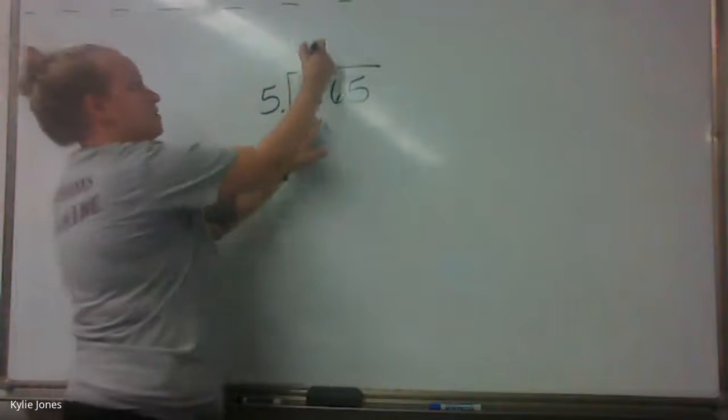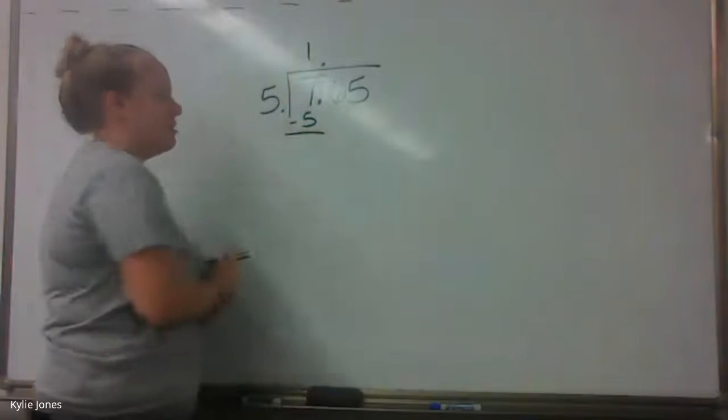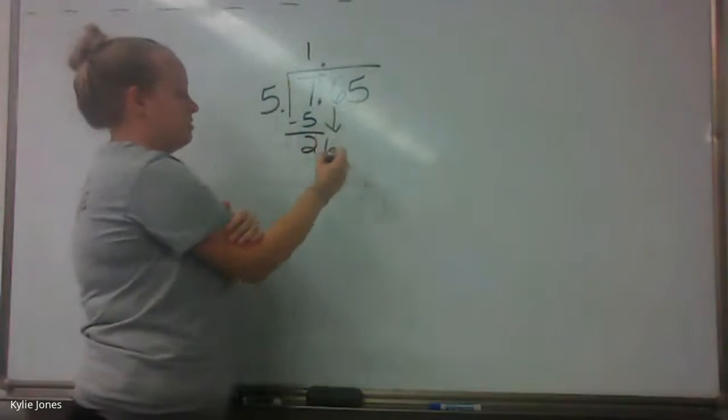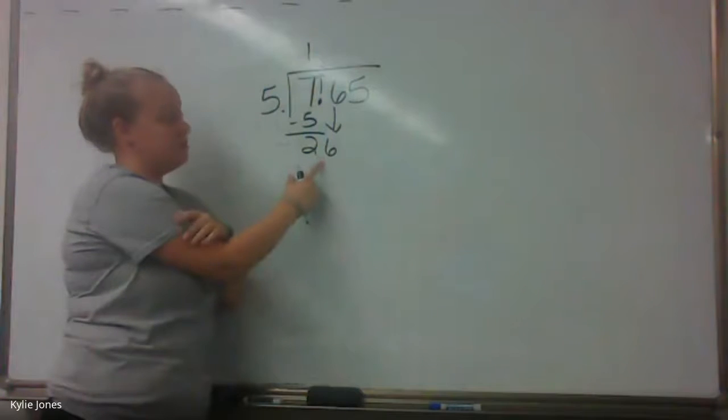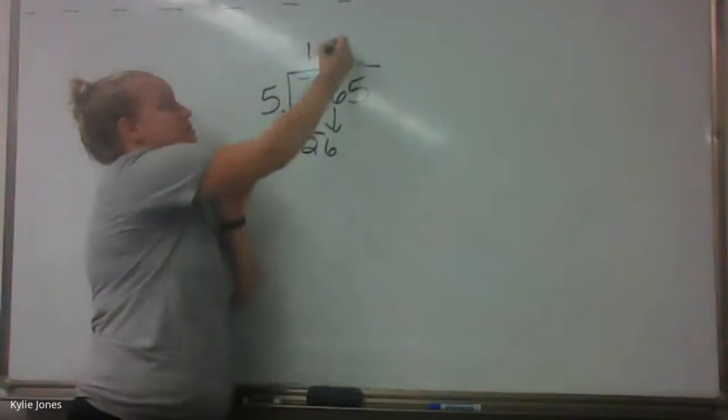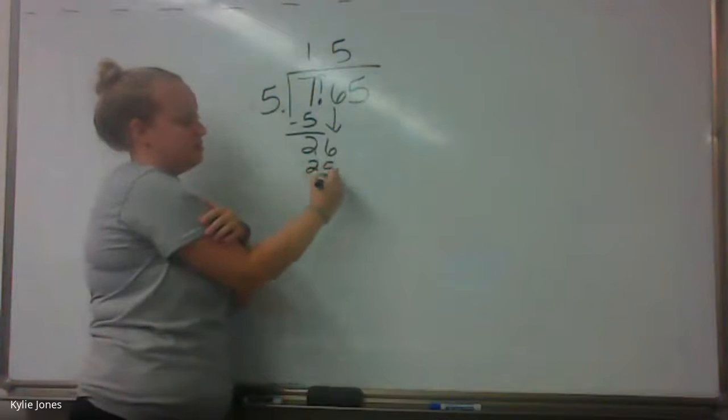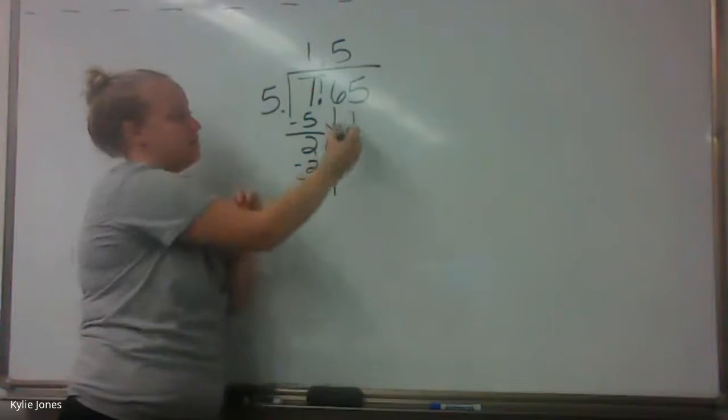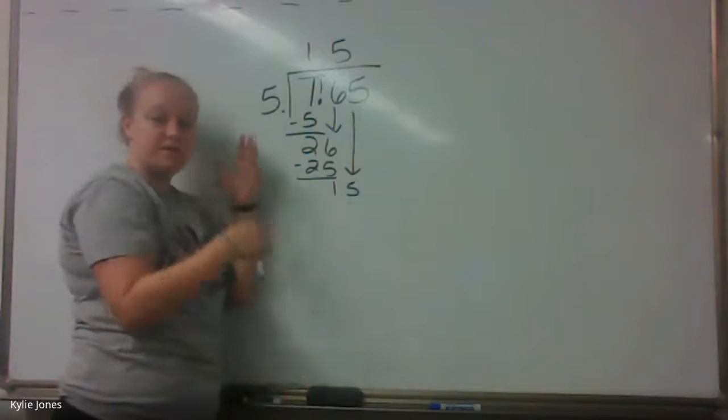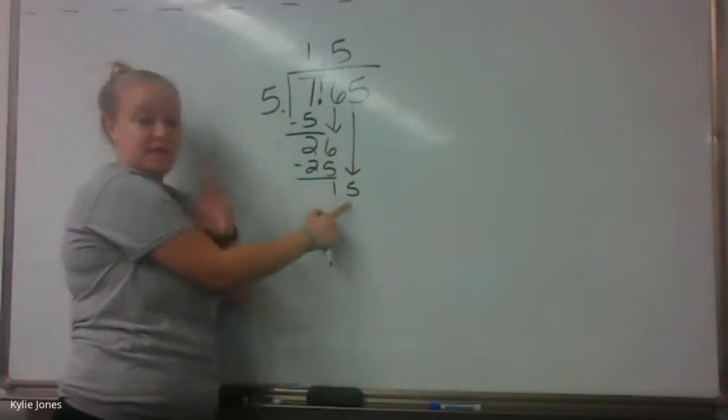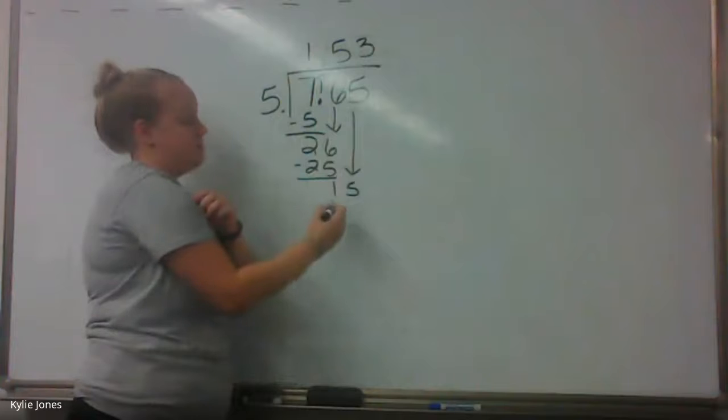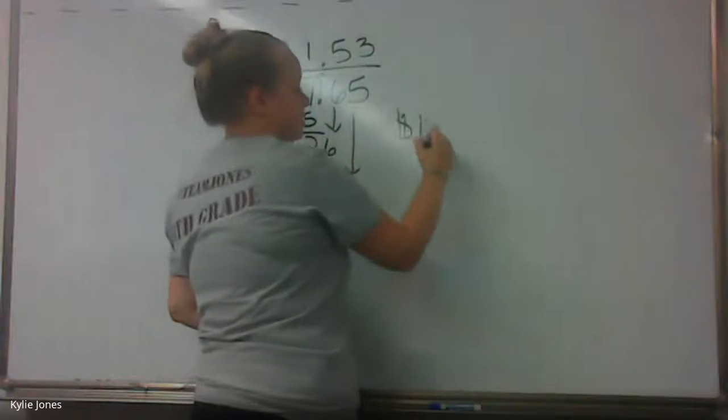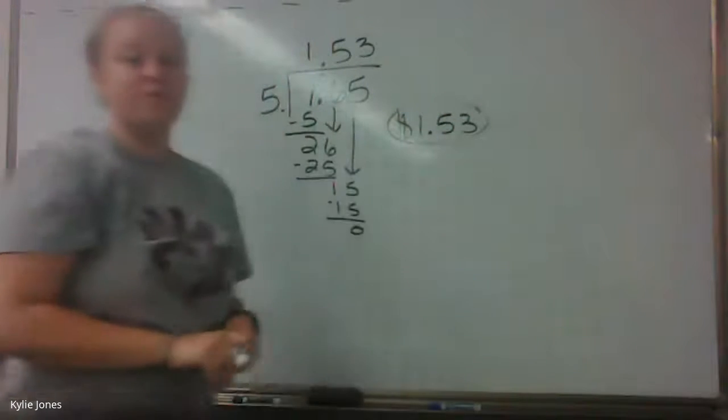So we do just 5, stick it to 7. We know it's one time. So we have our 1 on top and we subtract 5 on the bottom. So 7 minus 5 is 2. Then we need to drop down our 6. And we see 5, how many times does it go into 26? Which we know it's 5. So we have our 5 up here. 5 times 5 is 25 and we'll subtract. So 6 minus 5 is 1. And our last one, we drop down our 5. And we ask ourselves, how many times does 5 go into 15? We know it's 3. So we put our 3 up top and we subtract our 15 and we get our 0. So each friend needs to spend $1.53 on his bag of oranges.